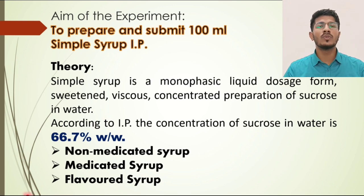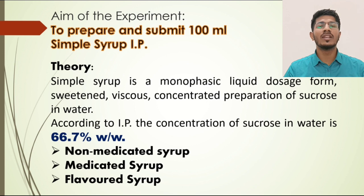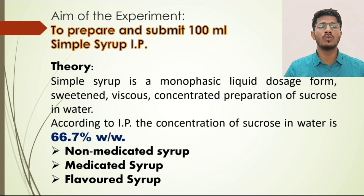Simple syrup is a monophasic liquid dosage form, which is sweetened, viscous, and a concentrated preparation of sucrose in water. Monophasic here means it contains only one phase. For example, salt in water — when you add salt in water, it completely dissolves and we cannot see the salt. We see only one clear solution. So that is your monophasic liquid dosage form.